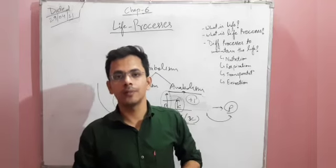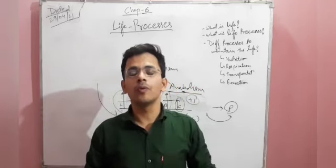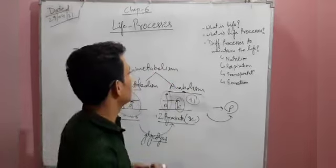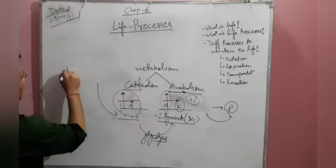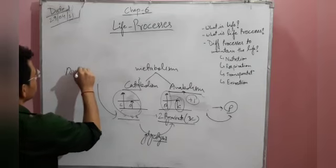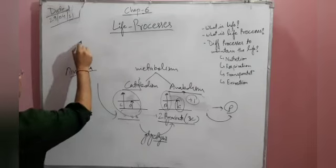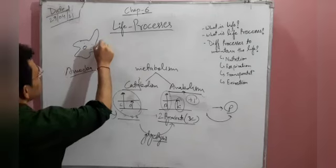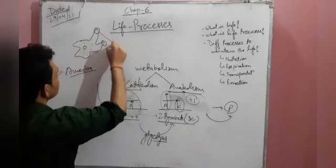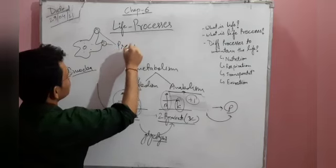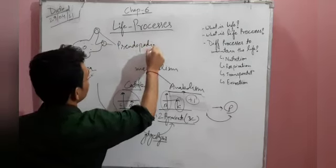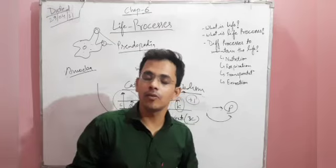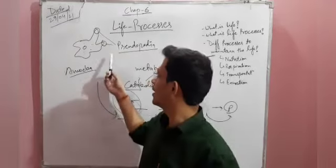In unicellular organisms, the entire organism is made of a single cell. An example is amoeba. Amoeba has finger-like projections called pseudopodia, which help it obtain food material and also help in drinking water.